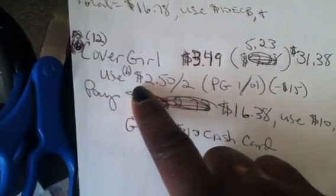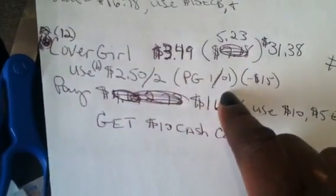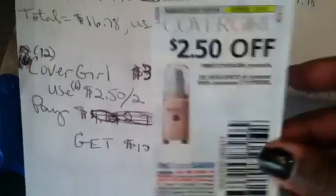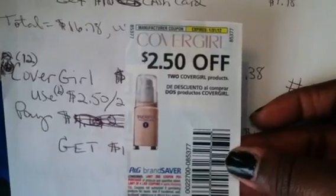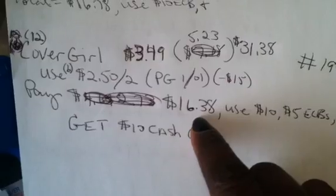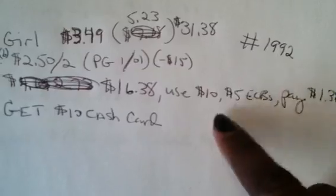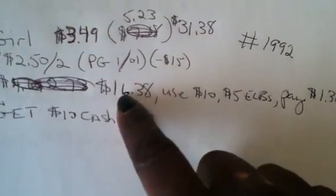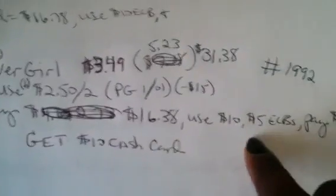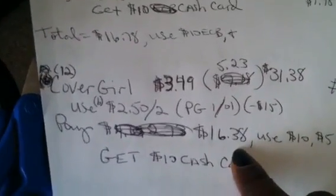Then you'll be able to use six of the $2.50 off of two coupons that came in the January 1st P&G. That's taking off 15 bucks. This is the coupon that you're going to need for that scenario. Right here, it's $2.50 off of any two CoverGirl products. So out of pocket you would end up paying $16.38. Once again, use extra care bucks, ECBs, extra care bucks or gift cards that you already have to pay that $16.38. And again, you're going to get that $10 in cash card, which means you're really only going to pay $6.38 for those 12 CoverGirl eyeshadows.